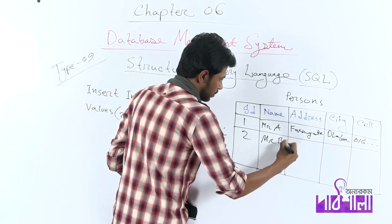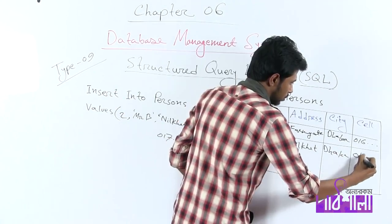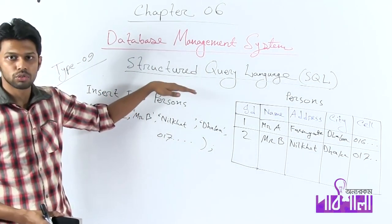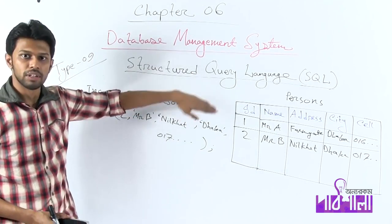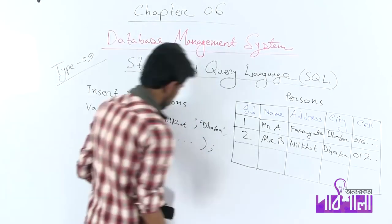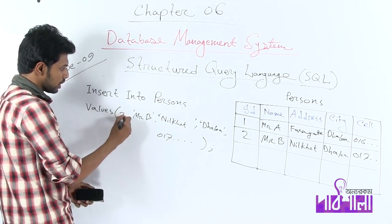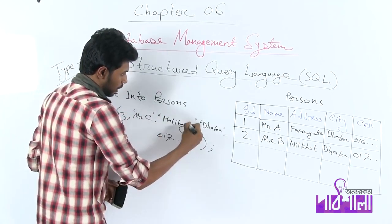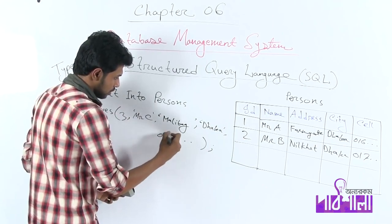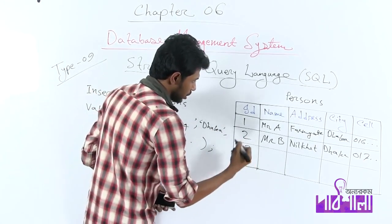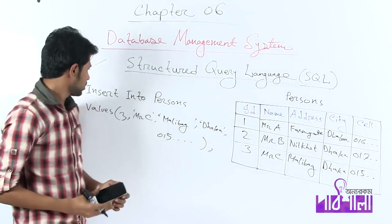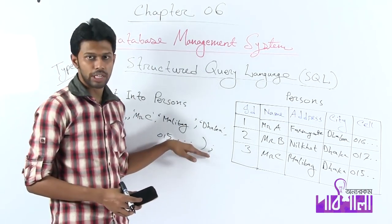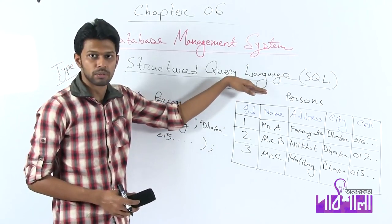Address is Nilkhet, city is Dhaka, cell number is 0170... After making these changes, running the INSERT INTO statement, you will be able to insert the data into the table.